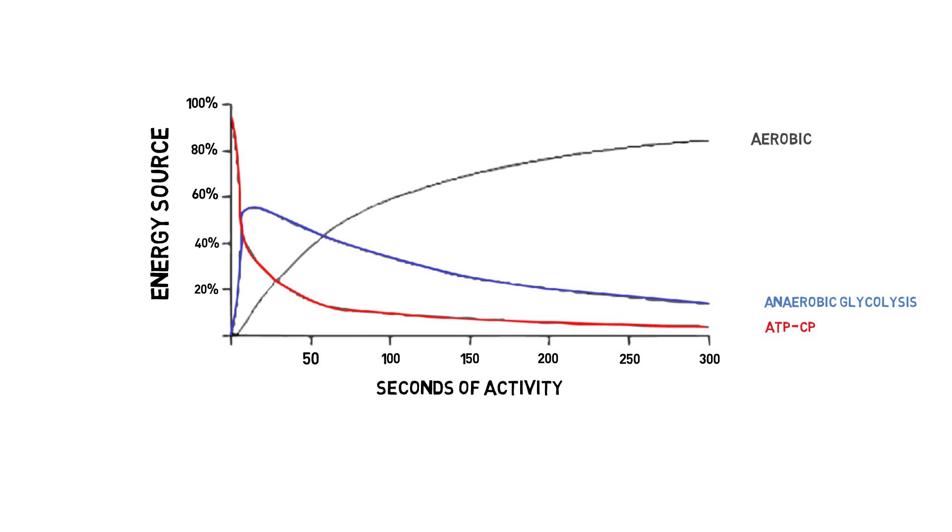For example, 200 seconds in, nearly 80% of the power is coming from the slow drip aerobic source. That is because the much better energy sources have already fizzled out. Let's look at the total power available, and I'll color code it based off which system is doing the majority of the work.